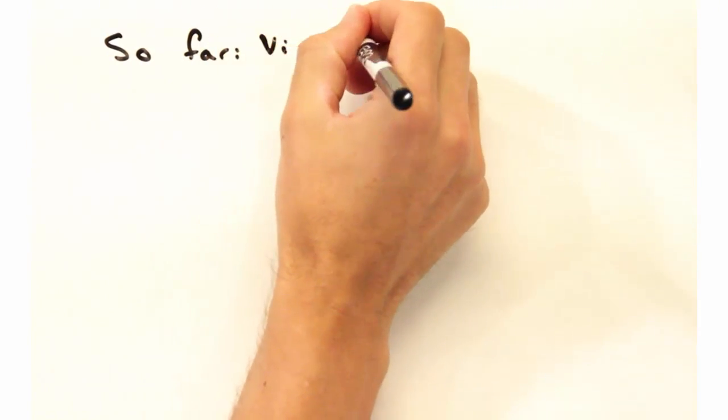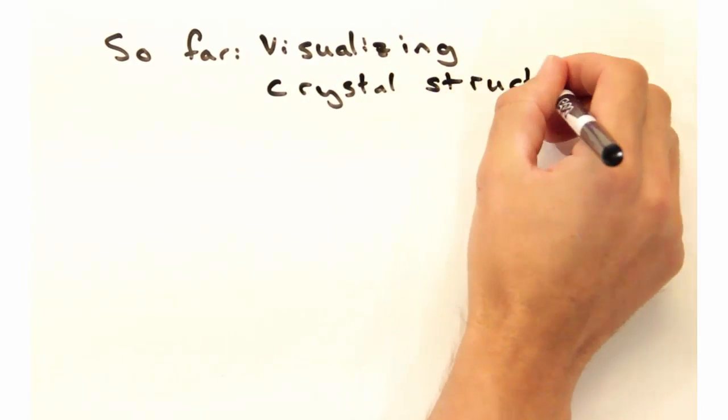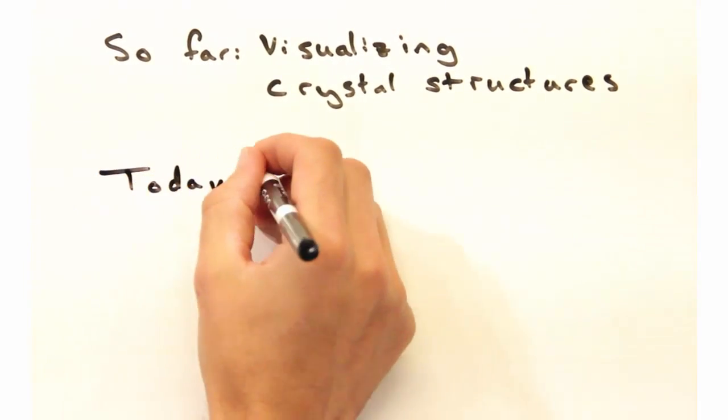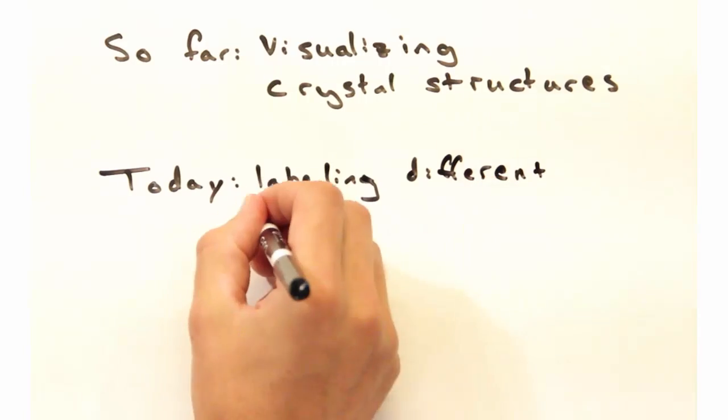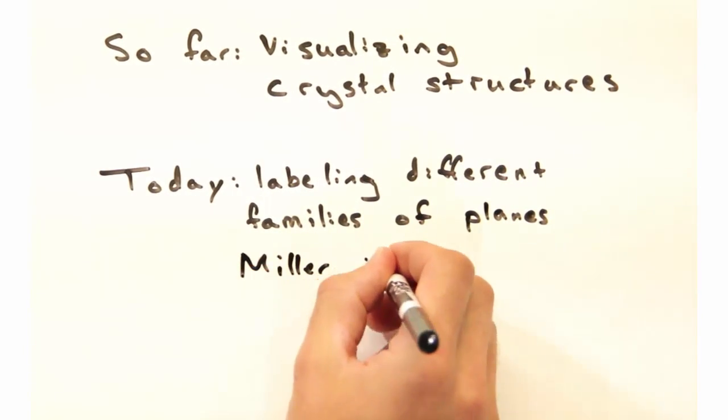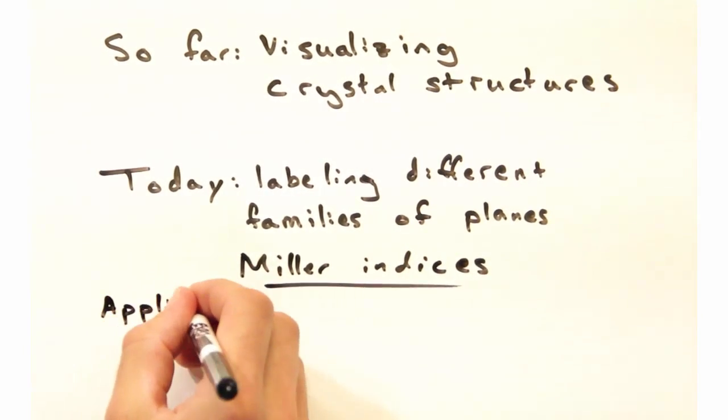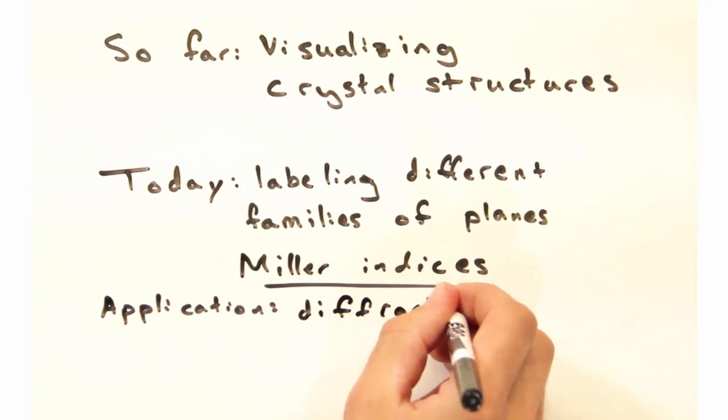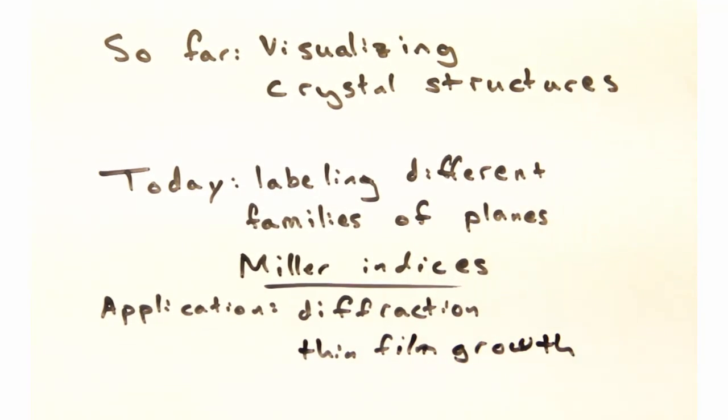So far we've talked about different ways of visualizing crystal structures, but now we want to develop a way to label different families of planes. We'll call the labeling notation Miller indices. While this may seem underwhelming, bear with us as this will become extremely useful in experimental applications such as diffraction and thin film growth.